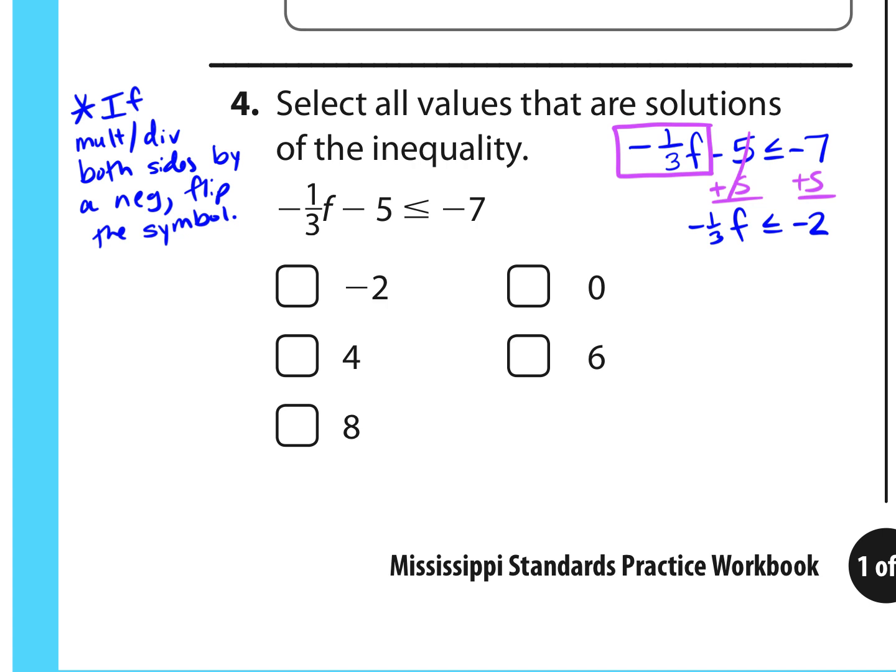Now to get rid of that negative one-third, I could divide both sides by negative one-third, but that is the same thing as multiplying by its reciprocal negative three. So, negative one-third times negative three cancels out, and we just get F. Negative two times negative three is six, and since we multiplied both sides by this negative, negative one-third, our symbol, which was less than or equal to, flips to greater than or equal to. So this is our solution set. Anything that's greater than or equal to six. So six and eight are both correct.